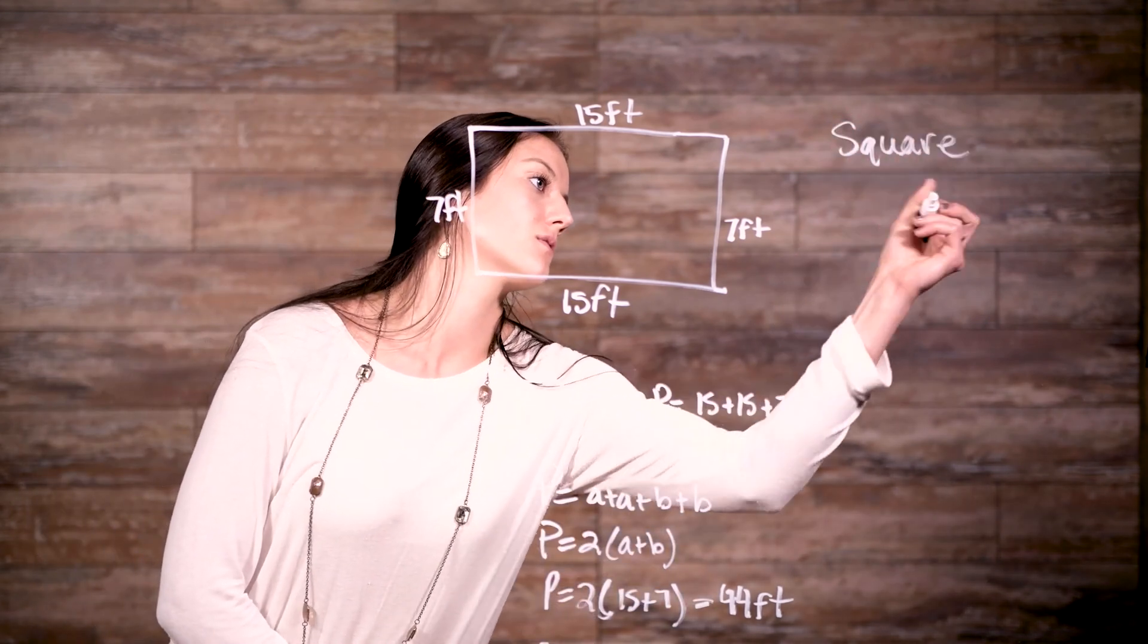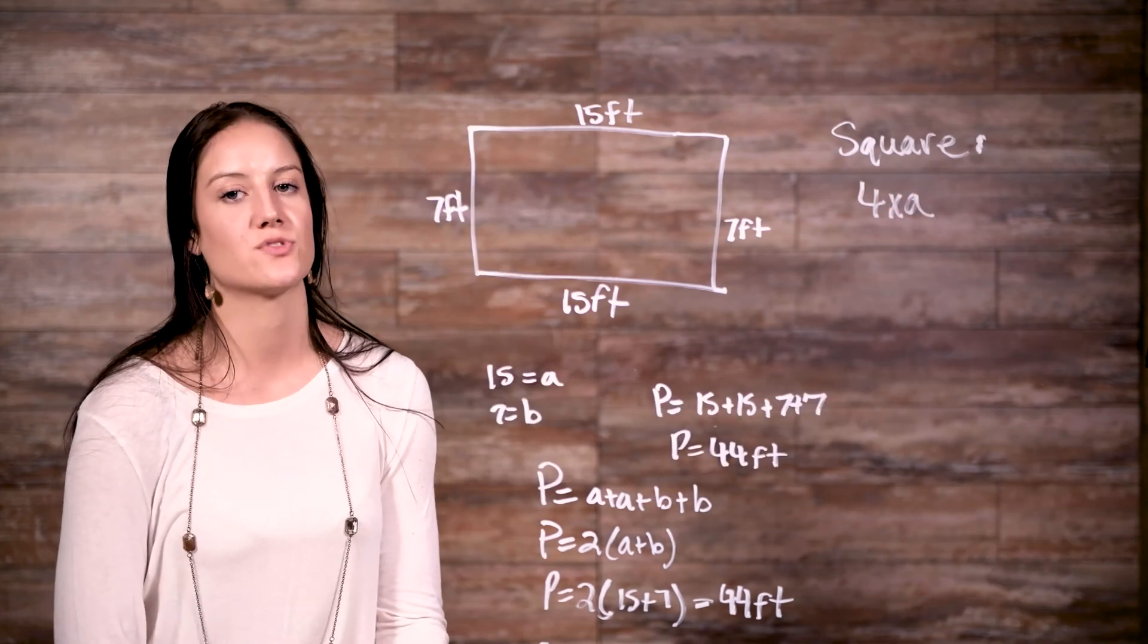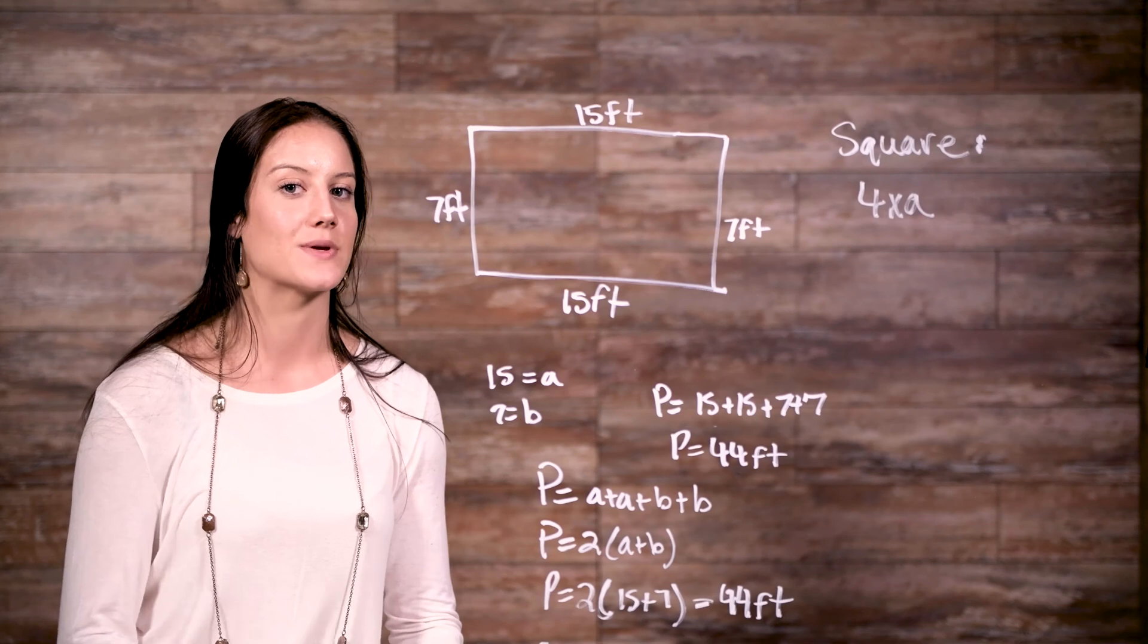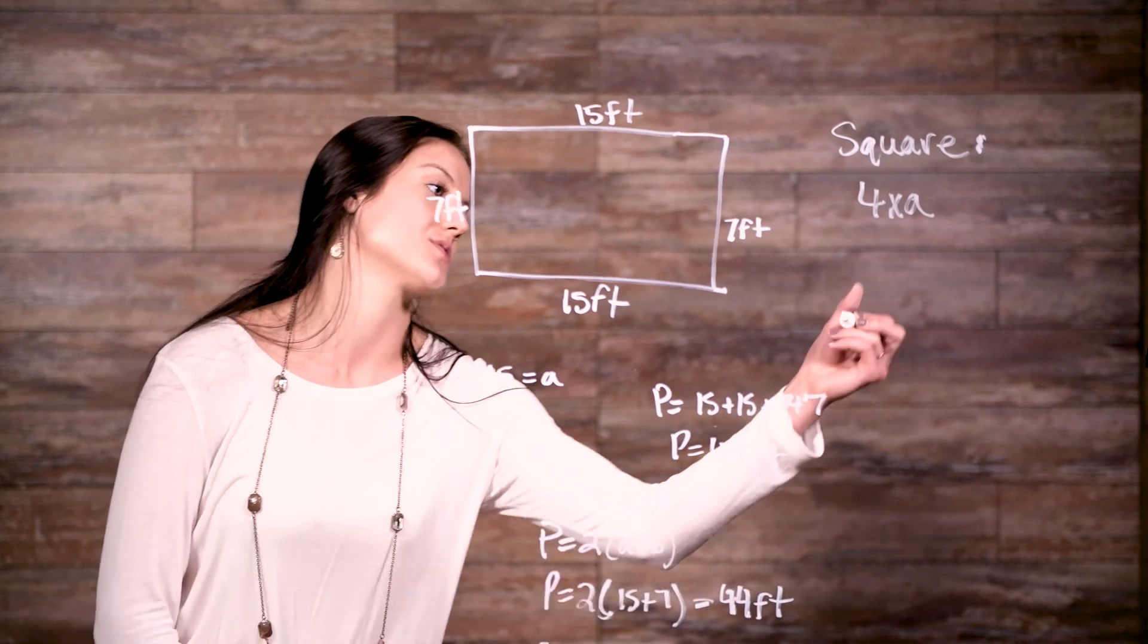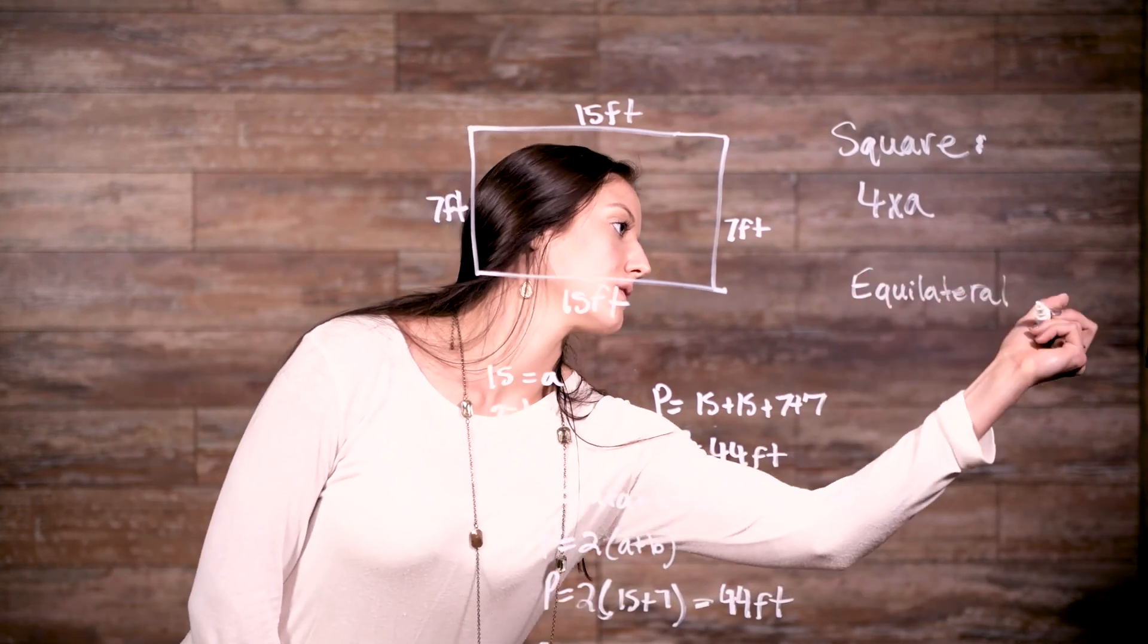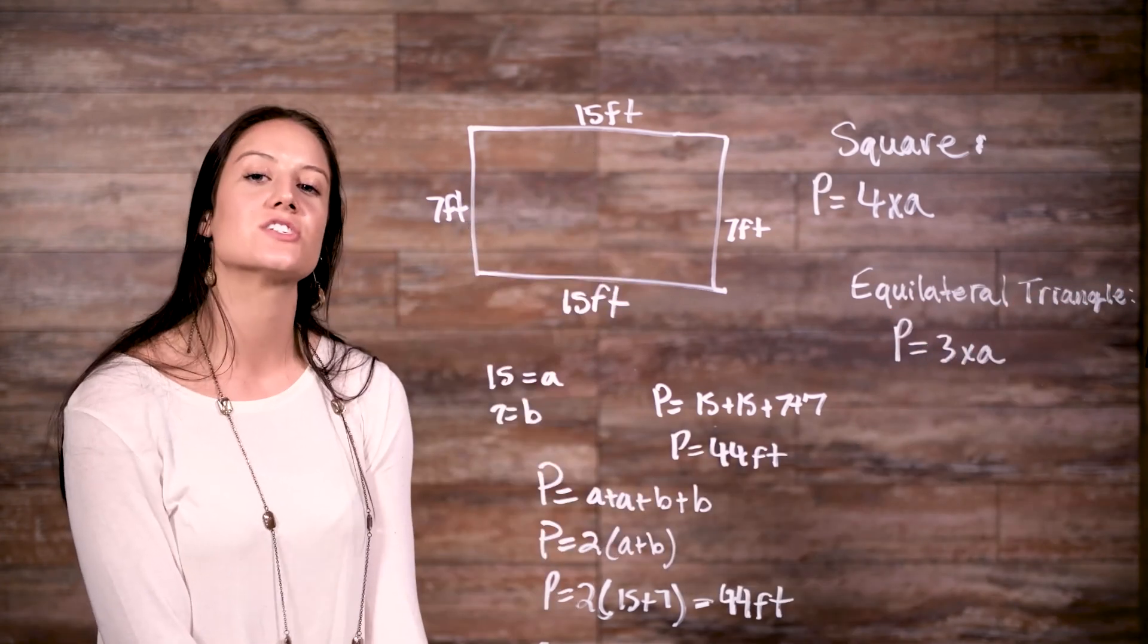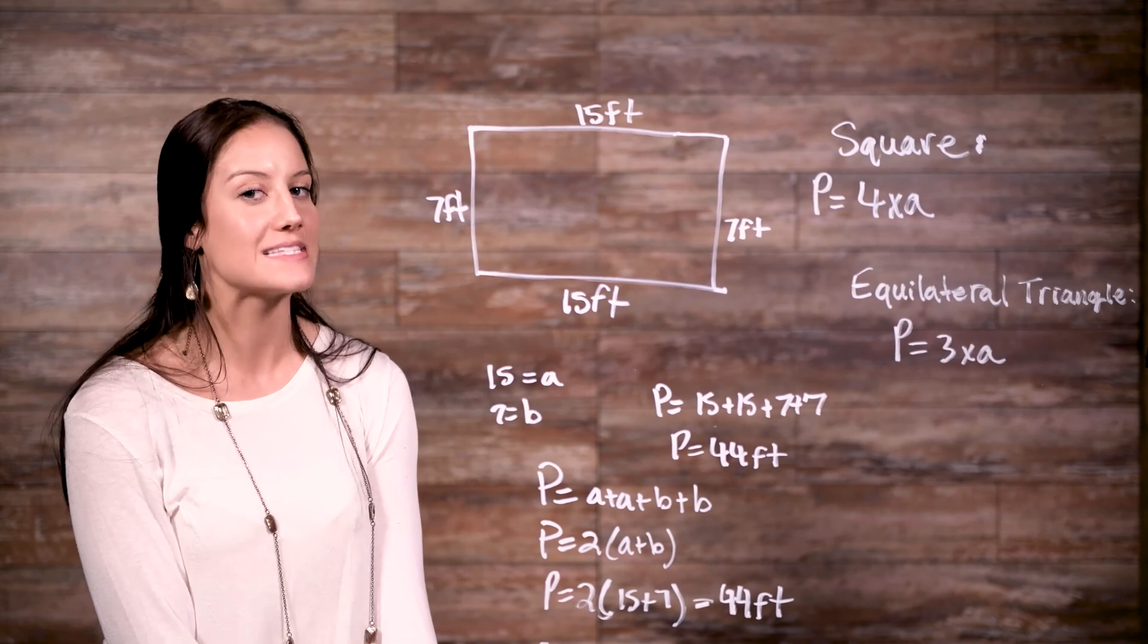And the same principle is true with an equilateral triangle. All three sides are the same, so we can say that its perimeter is equal to 3a. An isosceles triangle has two sides that are the same.